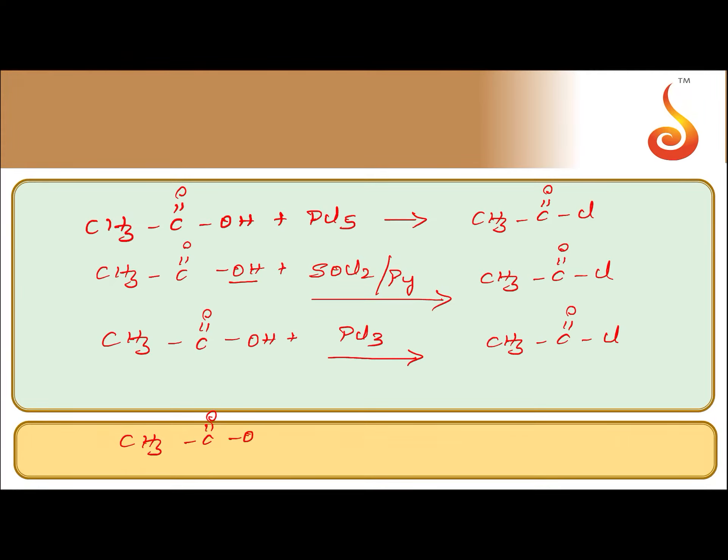When acetic acid is reacted with chlorine in the presence of red phosphorus, it is HVZ reaction, which means alpha halogenation takes place in the presence of red phosphorus and chlorine. So you will get alpha-halogenated acetic acid.